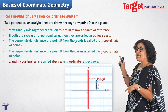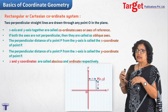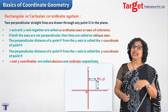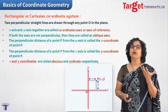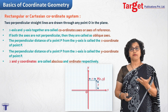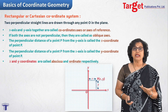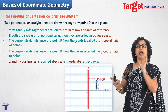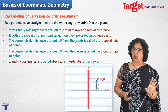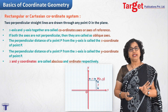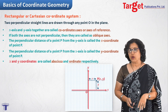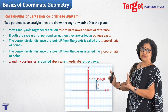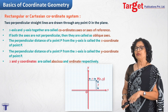X coordinate and Y coordinate are the standard terms. However, if you encounter the words abscissa or ordinate in a question, don't be confused: abscissa means X coordinate and ordinate means Y coordinate. That is how the Cartesian system is defined.